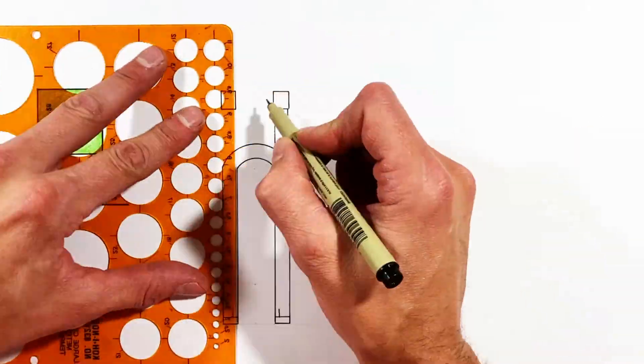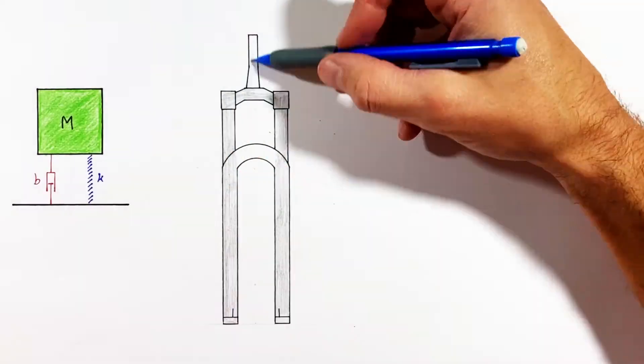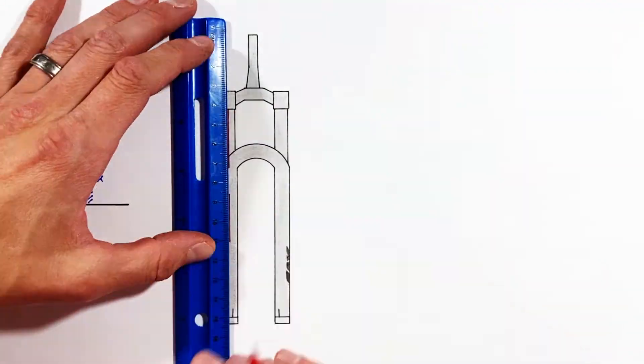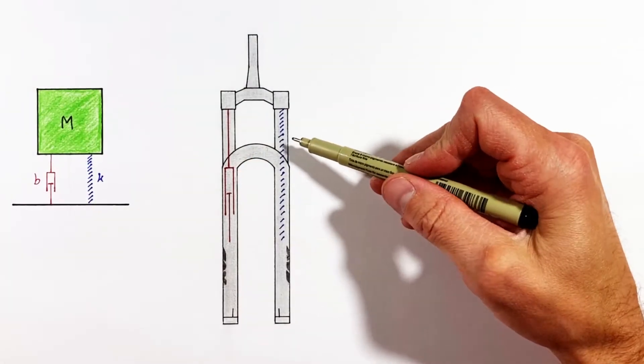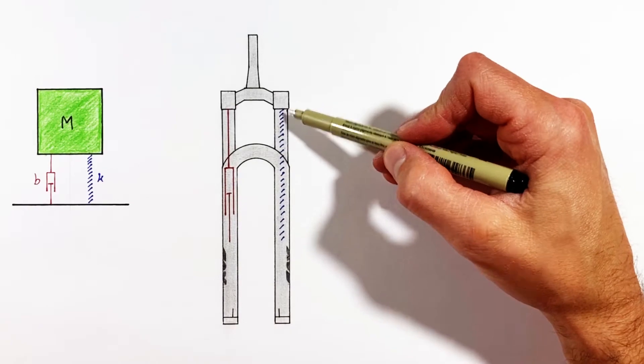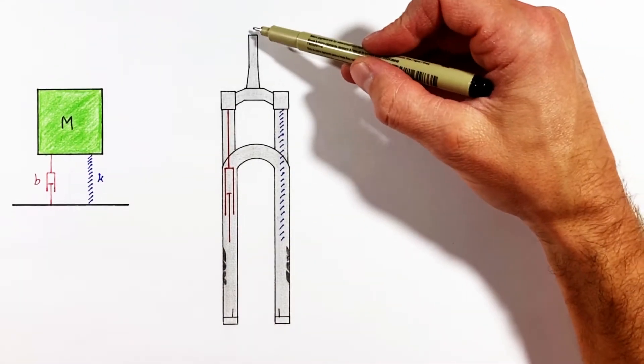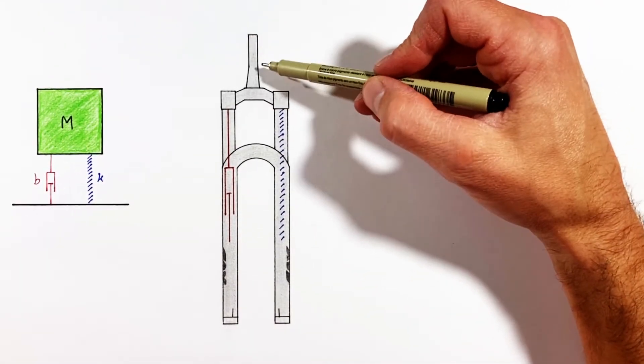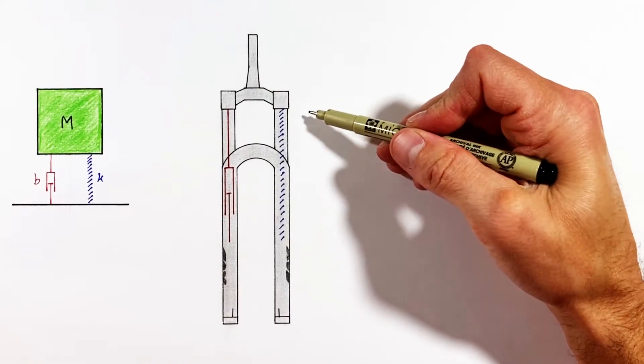So to derive the equation of motion, we're going to start by drawing a free body diagram of all forces acting on the upper side of the fork.